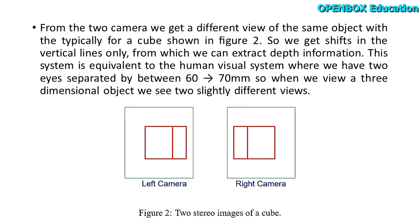From the two cameras we get a different view of the same object. Typically for a cube shown in Figure 2, we get shifts in the vertical lines only, from which we can extract depth information.